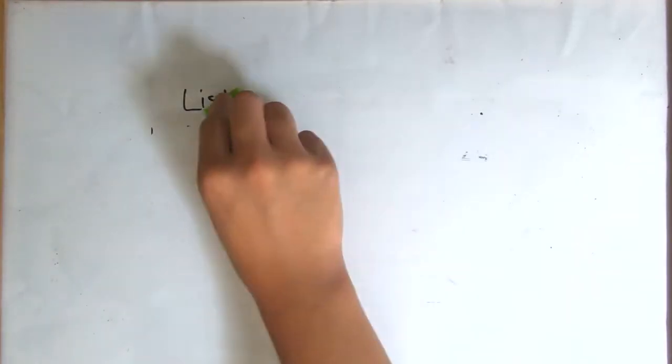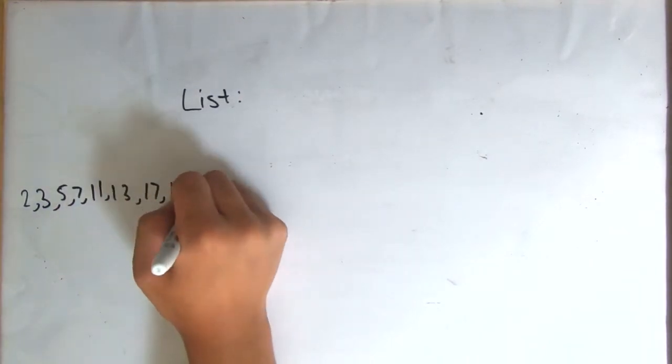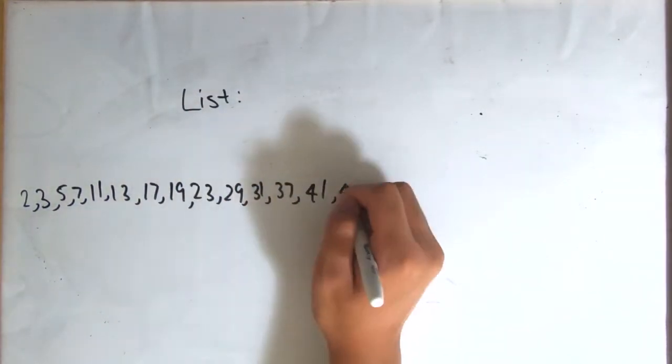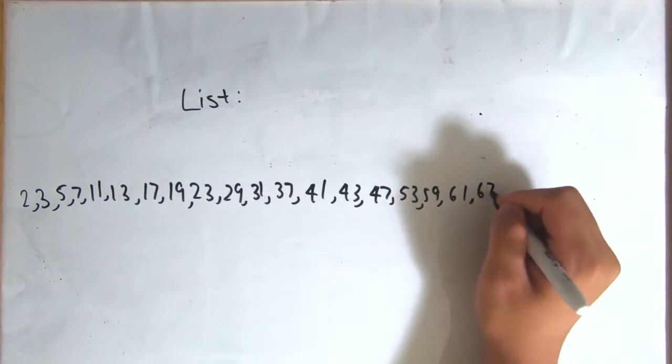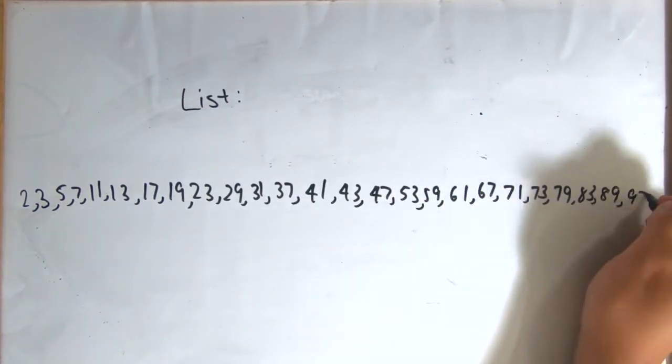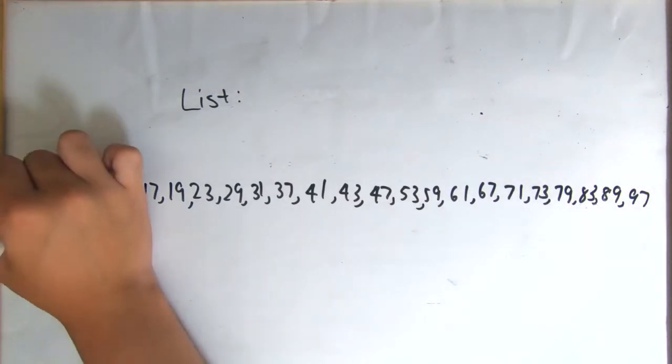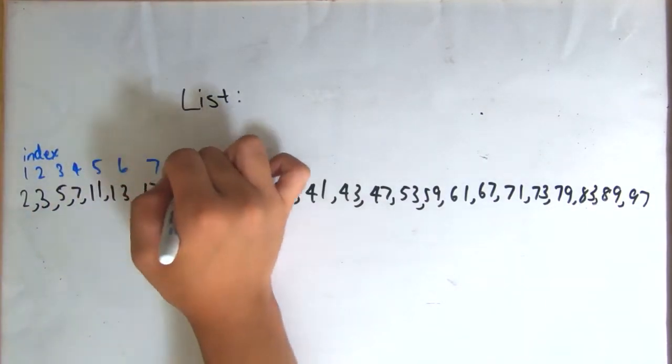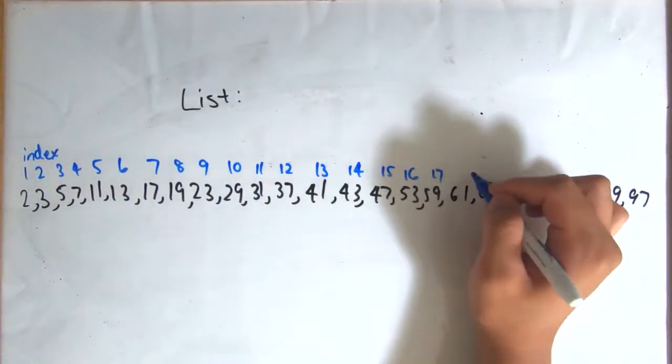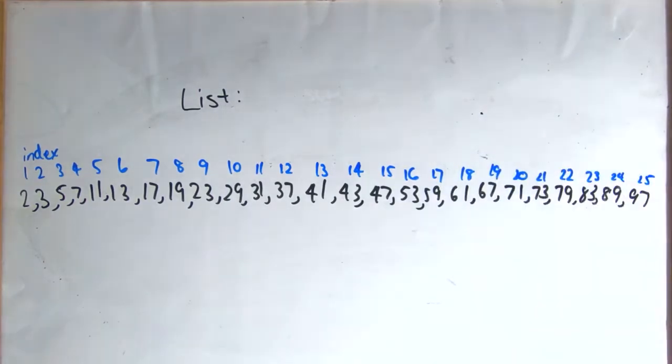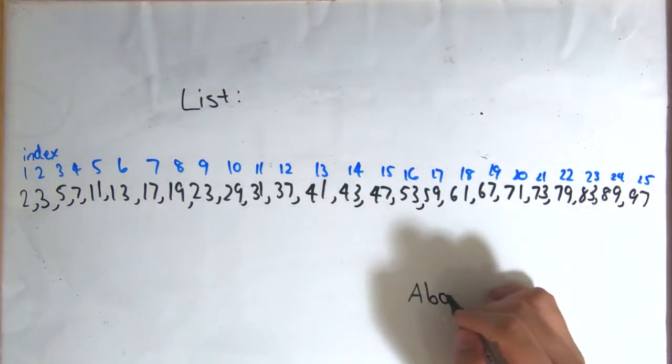But could still be sped up by utilizing something known as a binary search. In a binary search, you look at the midpoint of the list you have not yet checked to determine whether to look at a smaller or larger area. While we could use binary search twice on the row and column, let's rewrite this list as just one straight unidimensional list.